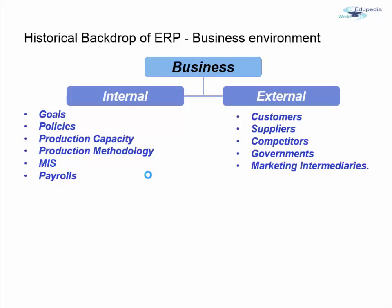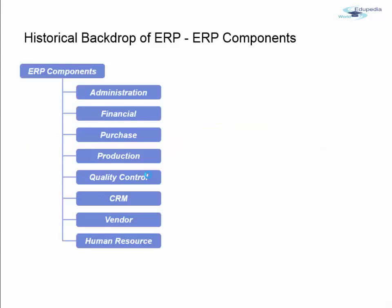ERP components typically include an administration module to set up the company, a financial module, a purchase module, a production module, a quality control module, a CRM module, a vendor module, and a human resource module. Administration sets up your company, financials handle banks and currencies, purchasing covers raw materials from vendors, production is the core, quality control ensures standards, and CRM manages customers and sales.